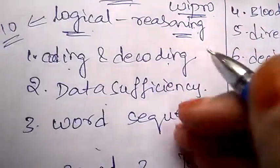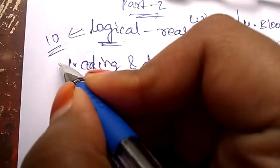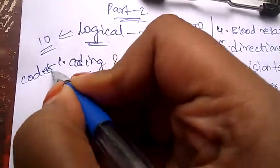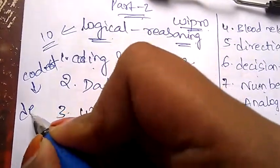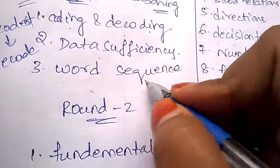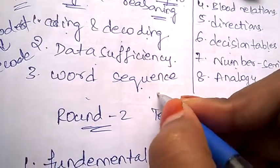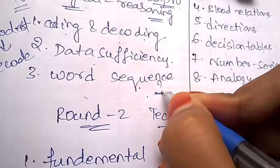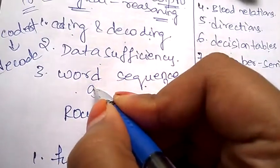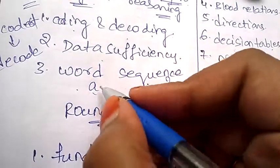Under coding and decoding, they'll give you a word which is coded and you need to decode it using logic. In word sequence, they'll ask what word will be appearing here. They'll give you three words, for example: age, basket, cat, and what will be appearing here?